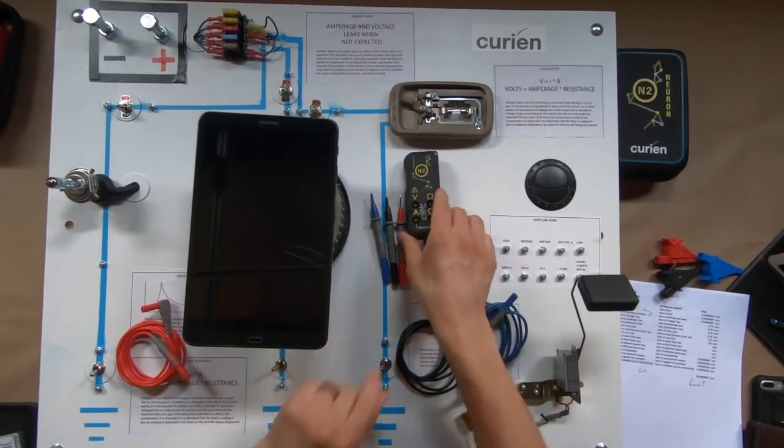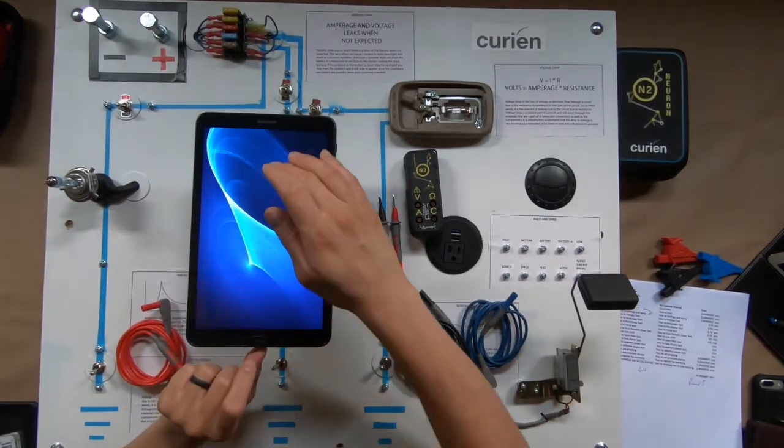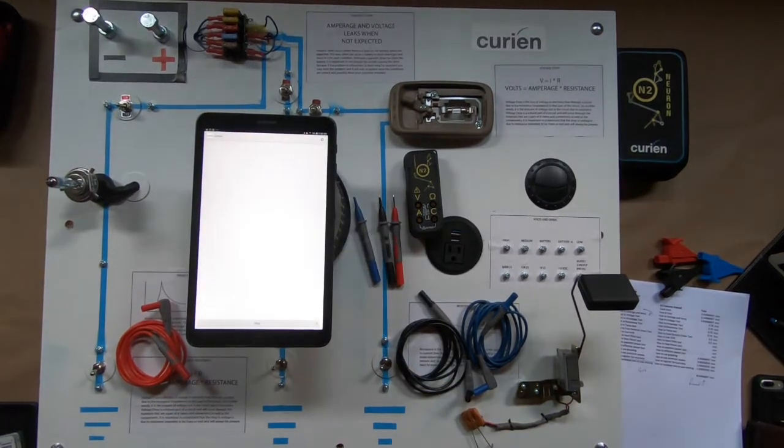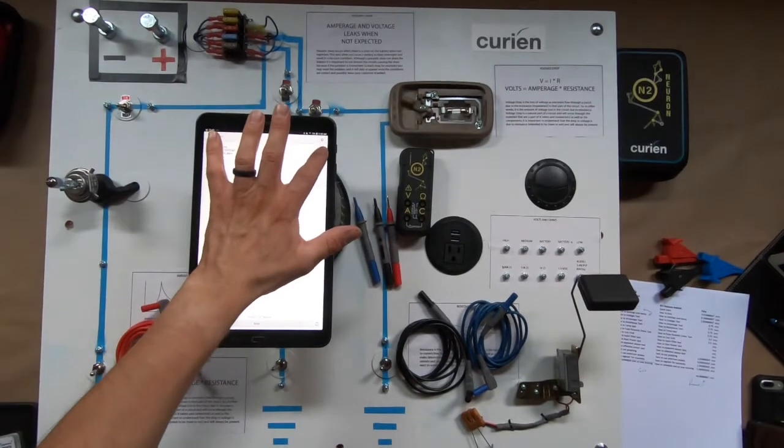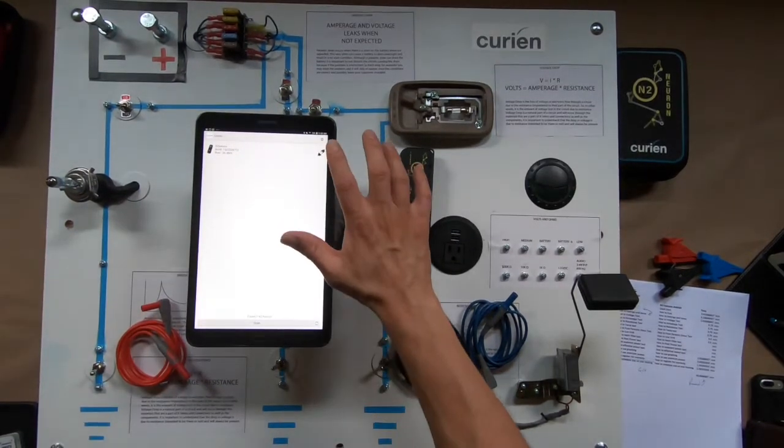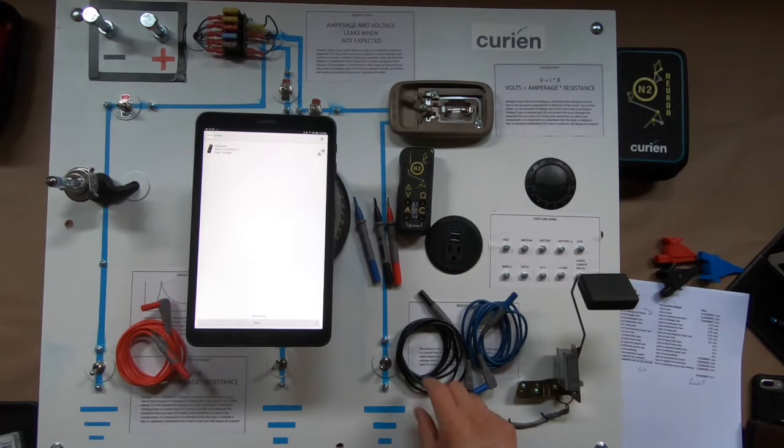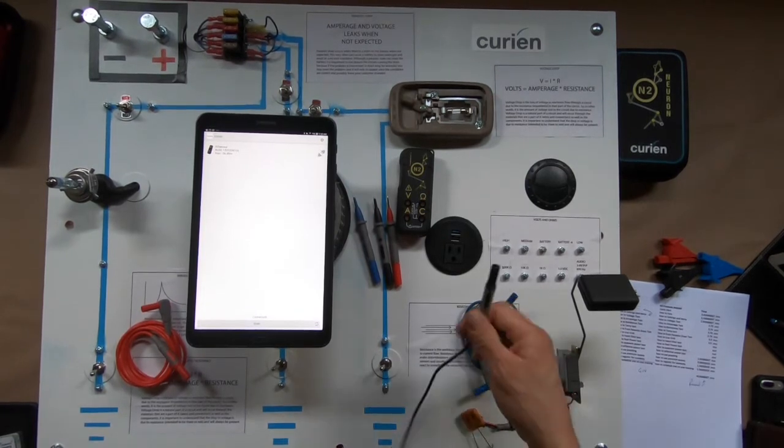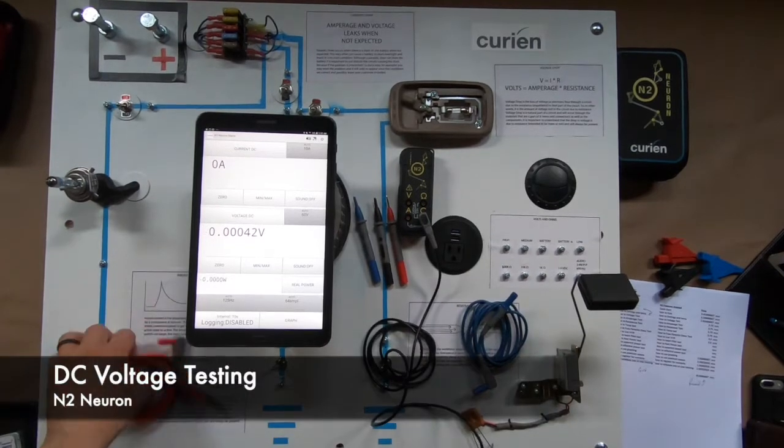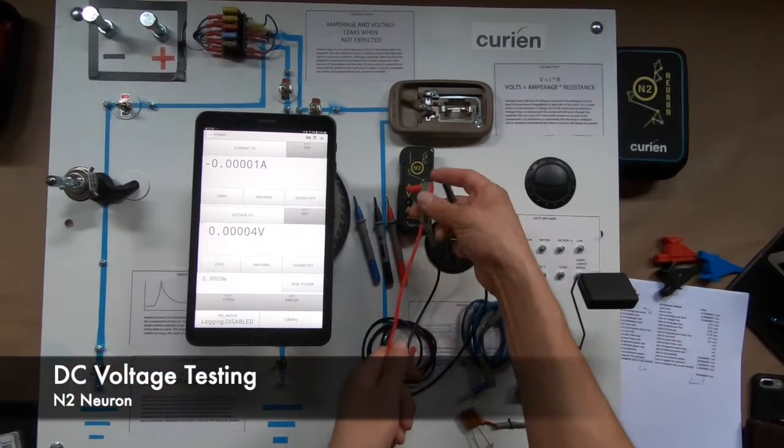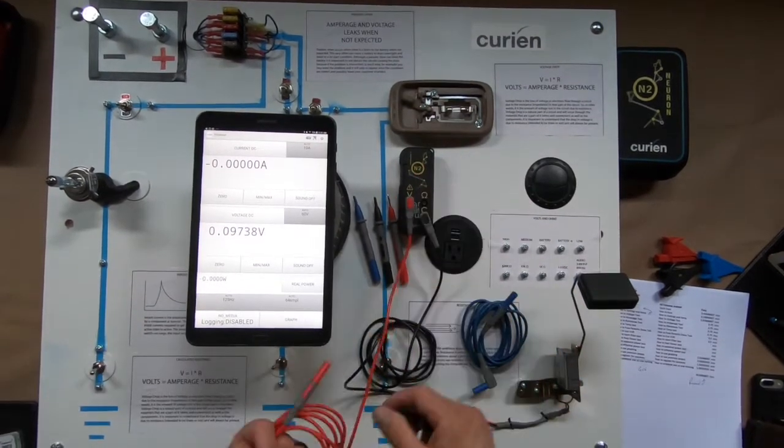Now what we're going to show you is how to set up your testing for that. So with the N2 connected to your app, in this case we will just connect here and we will be connecting in the ground side.